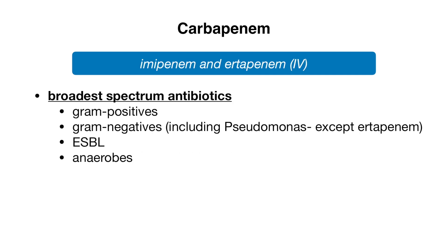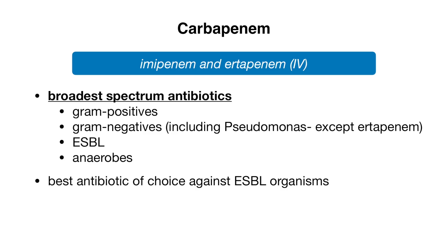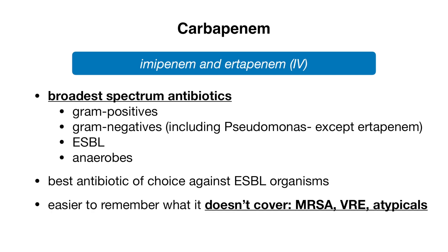Carbapenems are another class of beta-lactam antibiotics, including imipenem and ertapenem, available in IV form only. They are your broadest-spectrum antibiotics, covering gram-positives, gram-negatives including pseudomonas — except for ertapenem — extended-spectrum beta-lactamases (ESBLs), and anaerobes. Carbapenems are the best antibiotic of choice against ESBL organisms. It's easier to remember what carbapenems do not cover: MRSA, VRE (vancomycin-resistant enterococci), and atypicals.